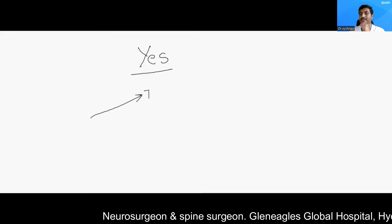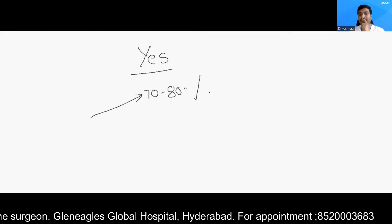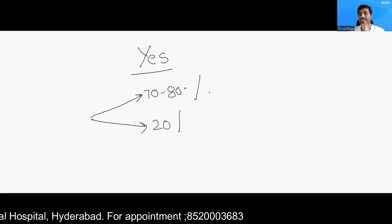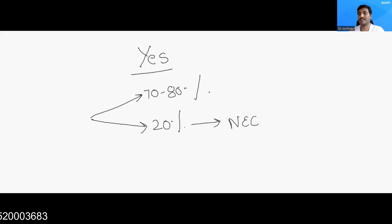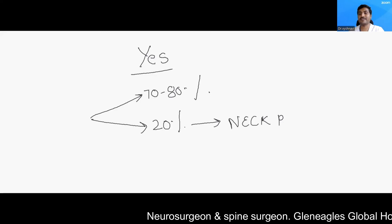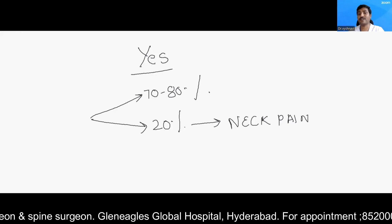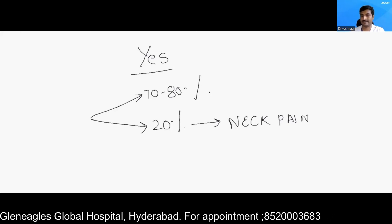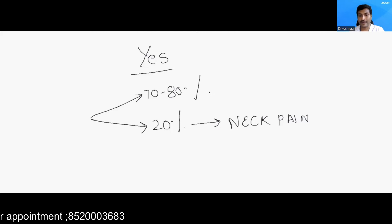Around 20 percent of patients can have accelerated and persistent neck pain. This is because of injury to various tissues like the ligaments, facet capsule, disc, and related structures. These 20 percent of cases can have neck pain for as long as 10 to 15 years after the injury. This is the present consensus, and it is the experience of the majority of neurosurgeons and spine surgeons.